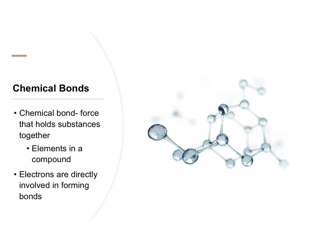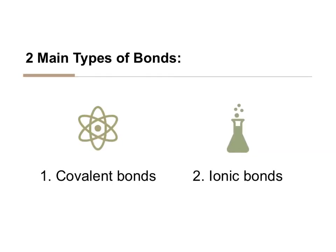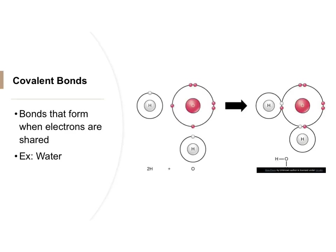The part of the atom that participates in bonding is the electron. There are two main types of bonds: covalent bonds and ionic bonds. Covalent bonds form when electrons are shared — the keyword here is shared. Make sure you know that covalent bonds form when electrons are shared. An example of a covalent bonded compound is water, H2O, with two hydrogens for every one oxygen.